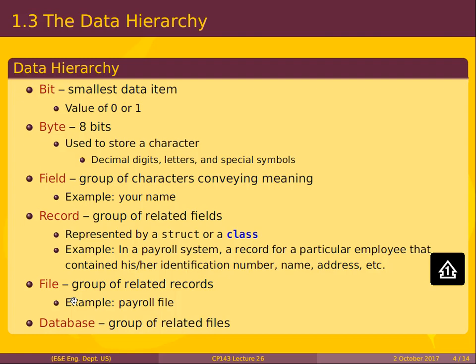A binary file is actually a group of these records. A database would then be a group of related files. For example, all employees of one branch are stored in a binary file in the database; employees of another branch in another file — one central database containing different files. In the files there are records, each grouping related information such as a struct representing an employee type. At the smallest level, this information is called a bit — essentially a zero or a one.